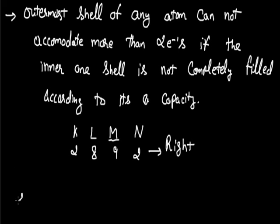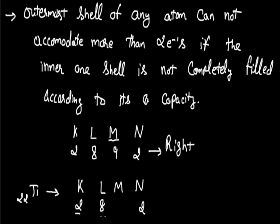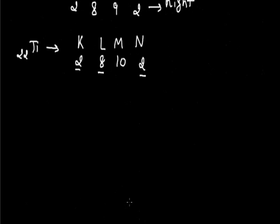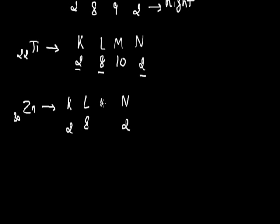For titanium with atomic number 22, the configuration is K2, L8, N shell constant at 2 electrons, and the remaining electrons fill M shell. After distributing 12 electrons, 10 electrons still remain for M shell. For zinc with atomic number 30, K shell has 2, L shell has 8, N shell stays at 2, and the remaining 18 electrons move to M shell.